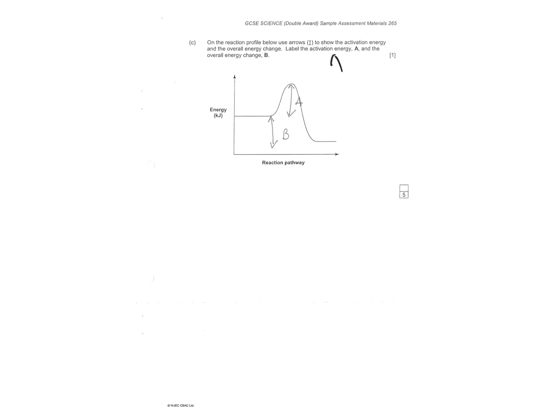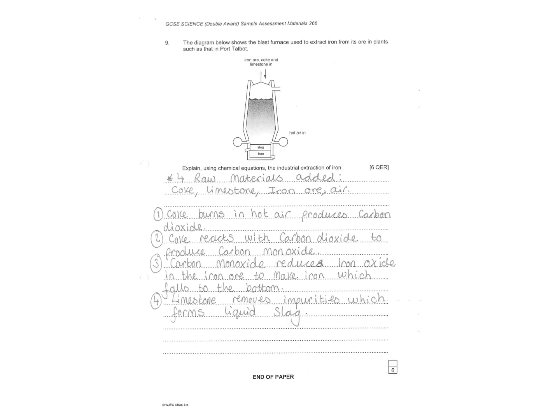Then it says label. Activation energy is always between the reactants and the top of the hump. Overall energy change then is between the reactants and the products. That again is a nice question. Just remembering the key facts about labeling an energy profile.